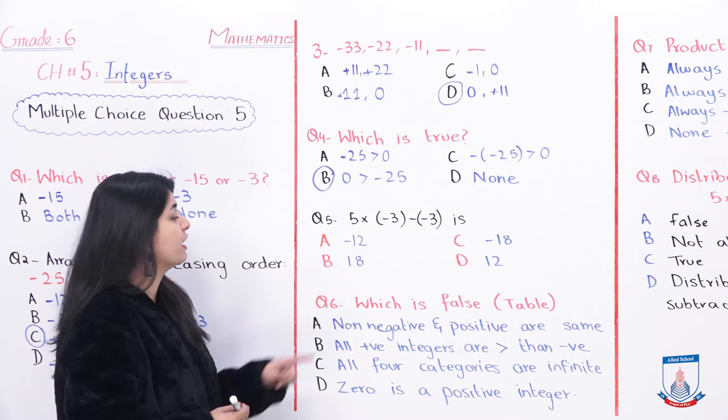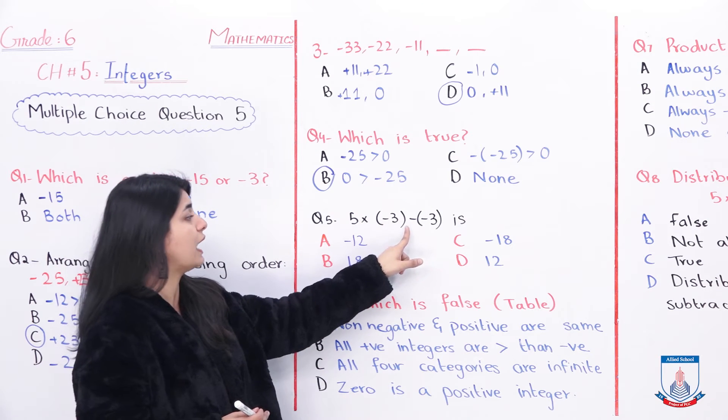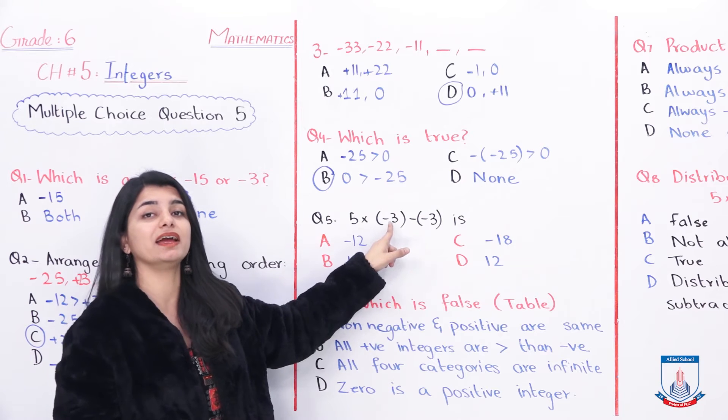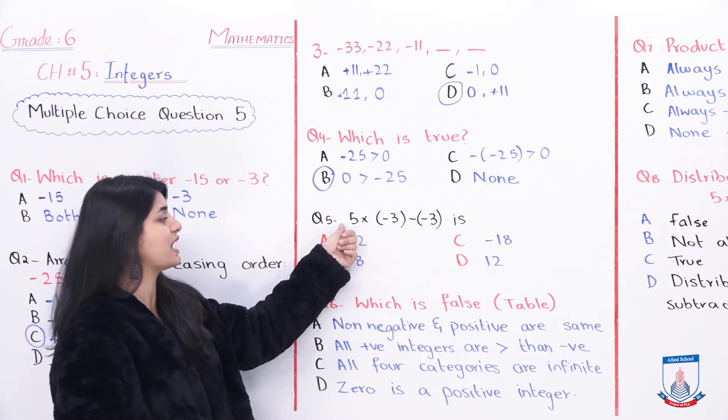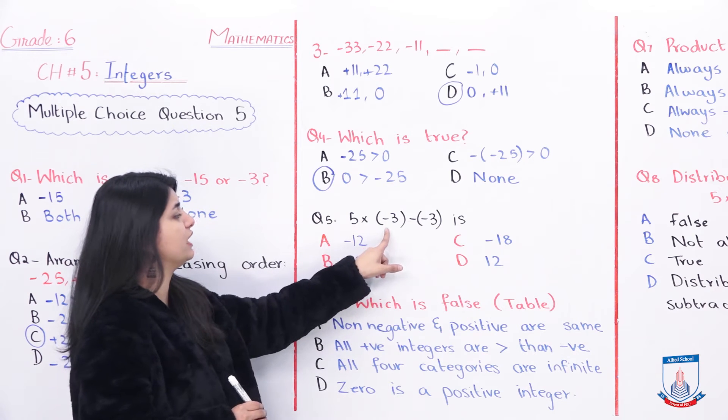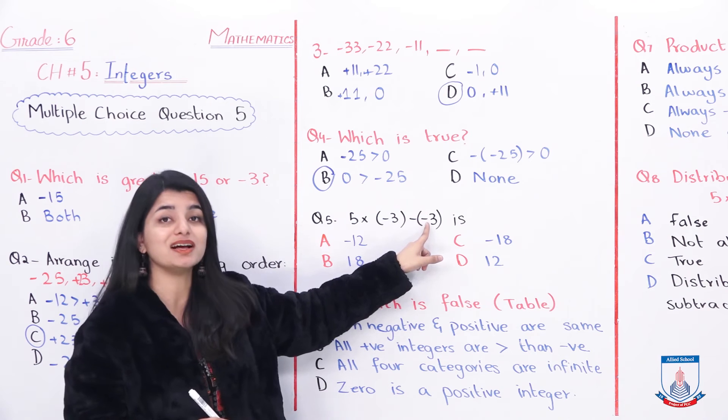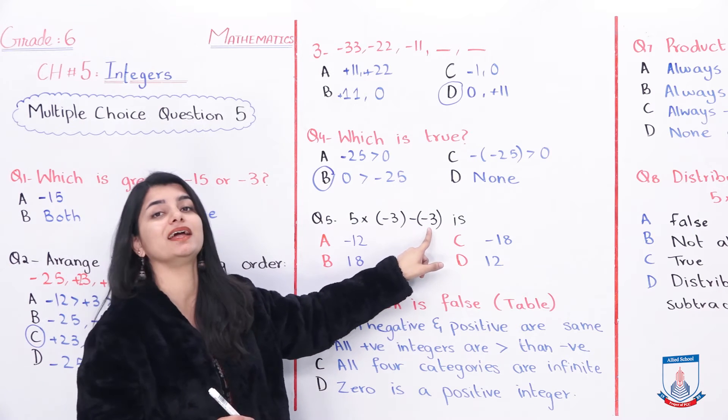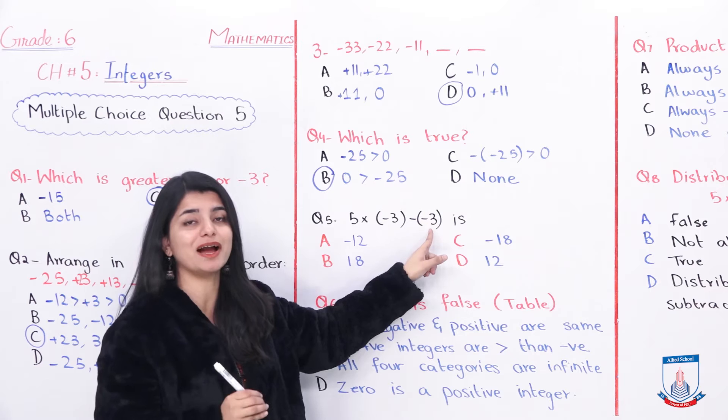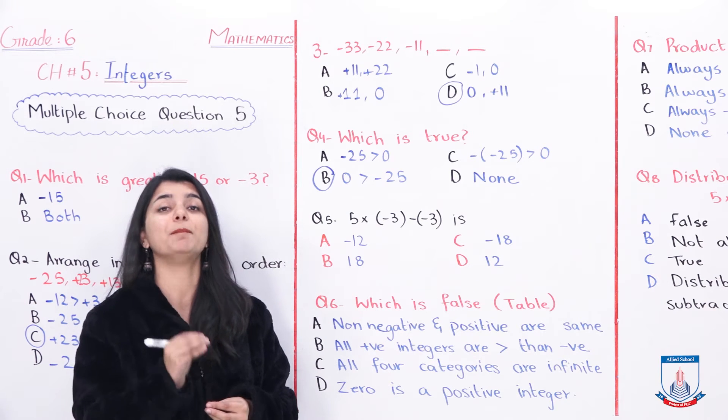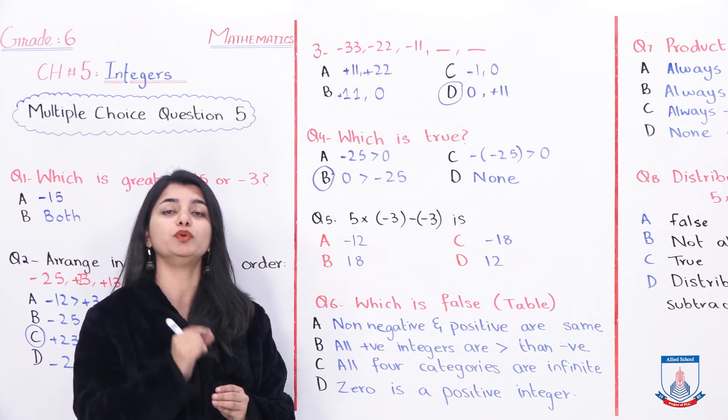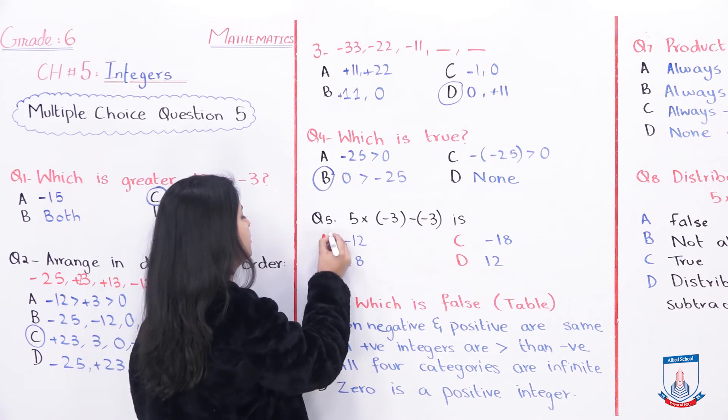MCQ 5: 5 multiplied by negative 3, minus negative 3. First you will multiply, 5 multiplied by negative 3 is what? 5 into 3 is 15. This sign positive, this negative, different signs, so you will get negative 15. Then negative 15 minus negative 3. So negative 15 plus 3, different signs you will subtract. Negative 15 when you remove 3, the answer is minus 12. 12 comes from 15 minus 3 and because 15 has negative sign and it is a big number, so we will also add negative sign with 12. The answer is option A.